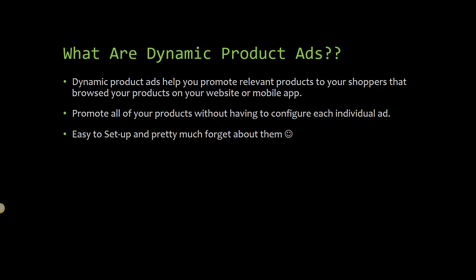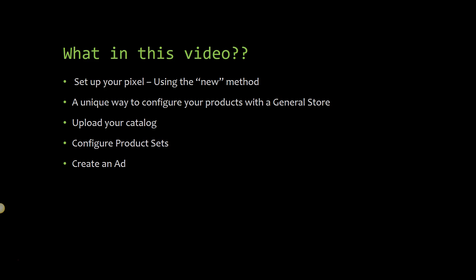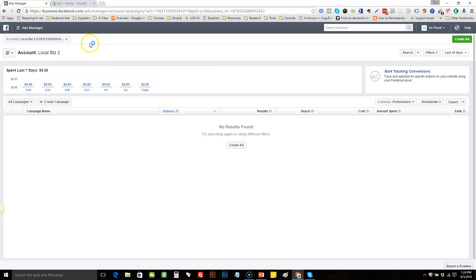With DPA ads it's pretty easy to set up and you pretty much forget about them. In this video I'm going to show you how to set up your pixel using the new way — it's really fast and easy. I'll show you a unique way to configure your products for a general store so your DPA ads can be extremely relevant to your visitors. I'll also show you how to upload your catalog, configure your product sets, and then create an ad.